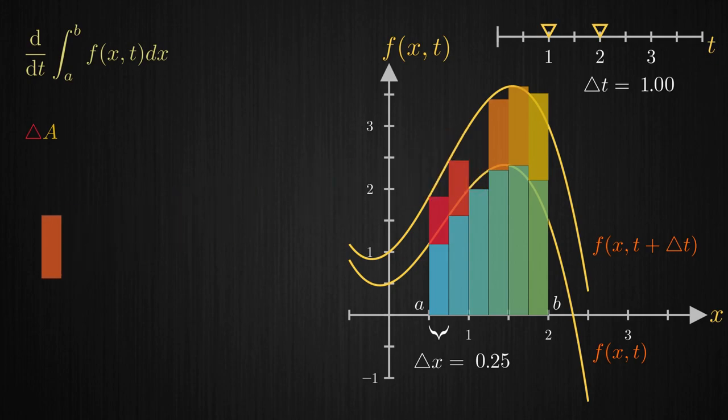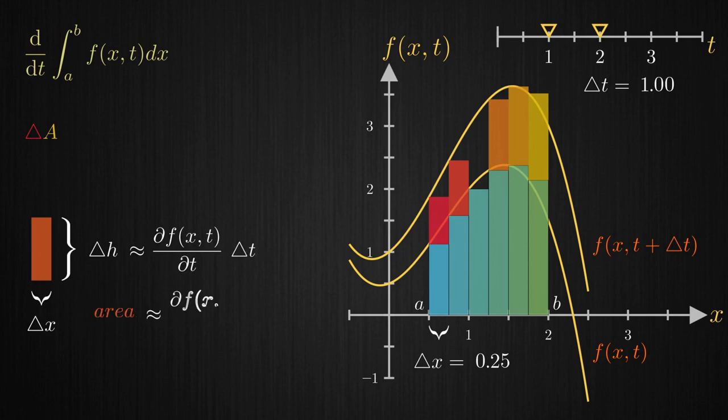If we pick one of these rectangles, the change in height Δh can be approximated with the product partial derivative of f with respect to t times Δt. Then this area can be approximated as the product Δh times Δx.